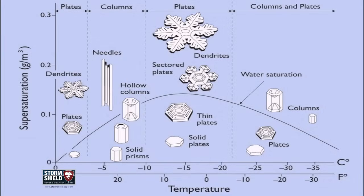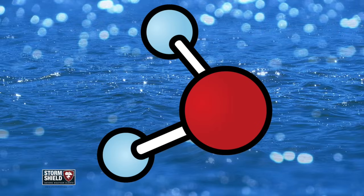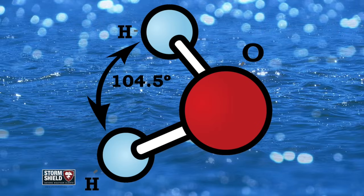But you may notice all of them are at least hexagonal — six-sided. This has to do with the atomic structure of water: the two hydrogen atoms and the single oxygen.